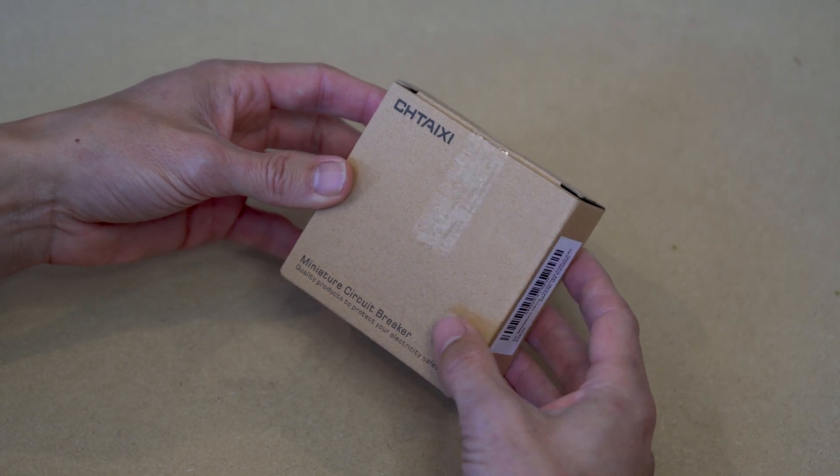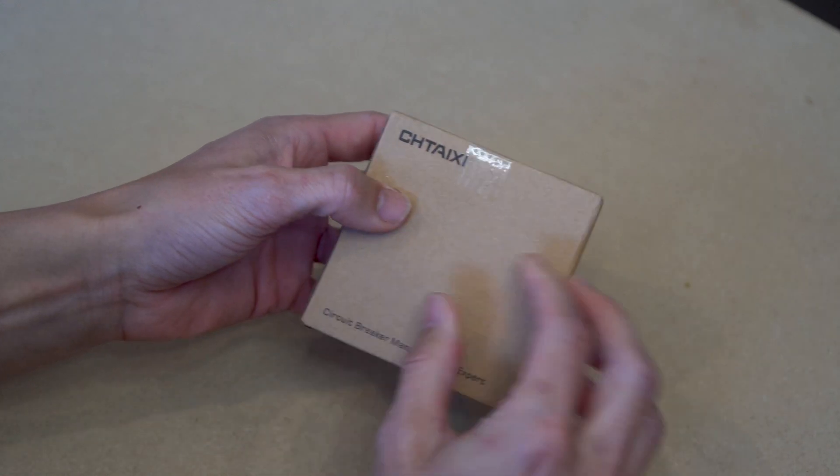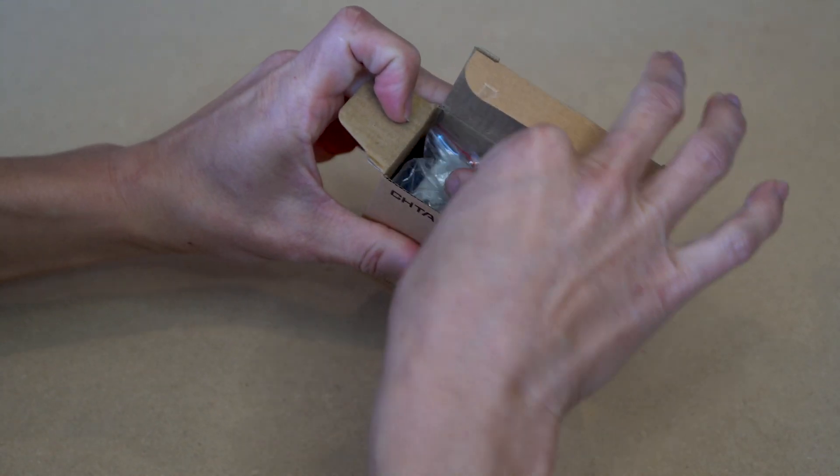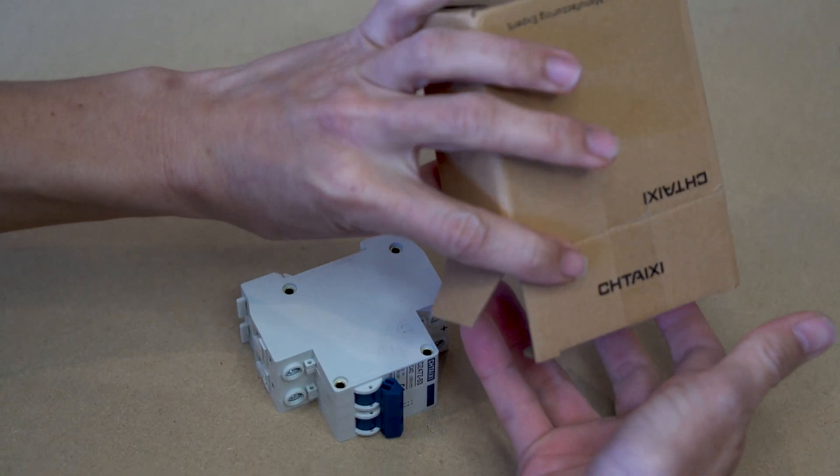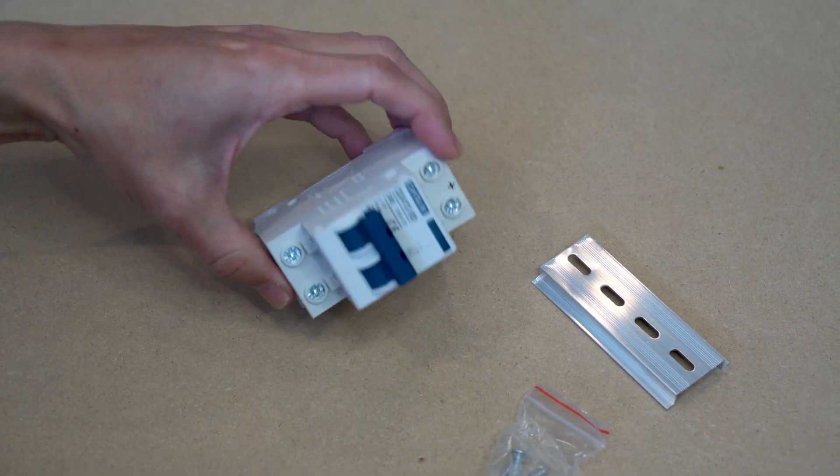This is what the product box looks like when you first get it. Nothing fancy and not much product information. Inside the box you have two mounting screws, the main breaker component, and a DIN rail mount but no user manual.